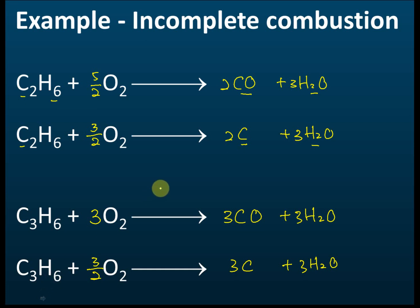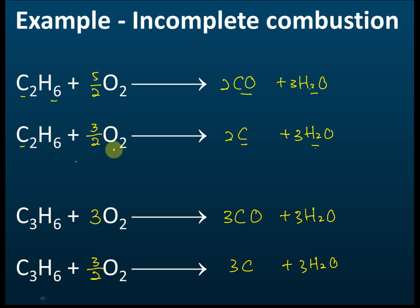To summarize combustion: always include oxygen as a reactant. For incomplete combustion, products are carbon monoxide and water, or carbon and water. For complete combustion, products are carbon dioxide and water. When balancing, always balance carbon first, then hydrogen, and balance oxygen last.